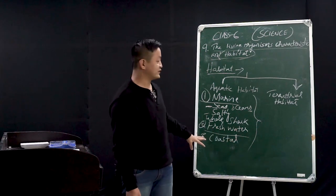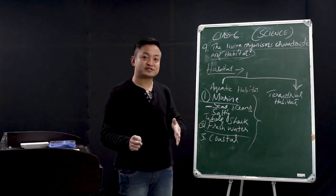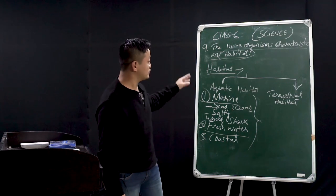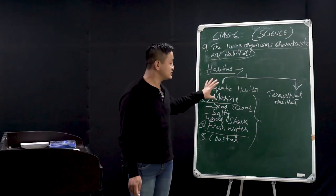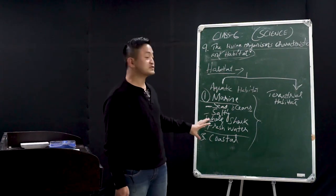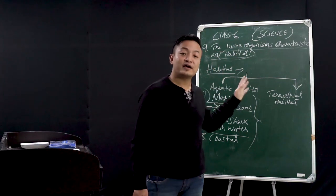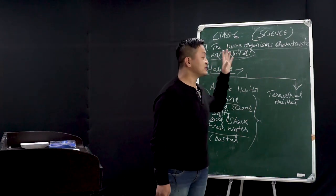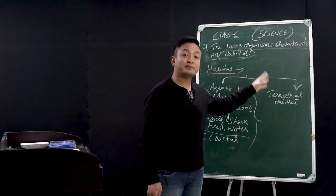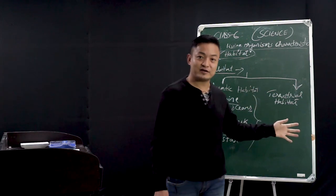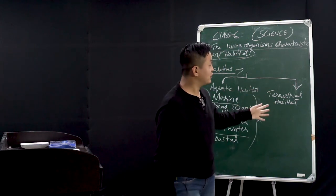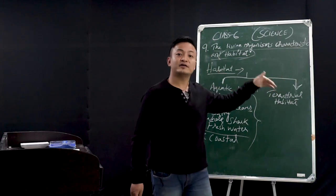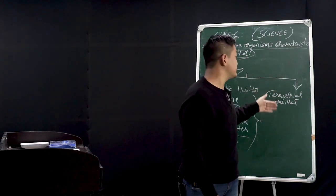These are all water-based, but we have different divisions. Please make a note: marine, freshwater, and coastal all come under aquatic habitat. Now we are going to talk about terrestrial habitat. Terrestrial means land — this is where we humans fall under.